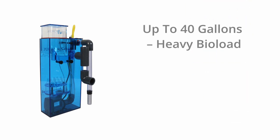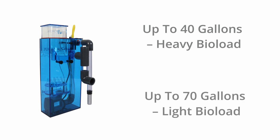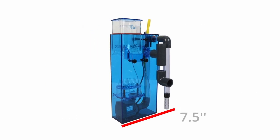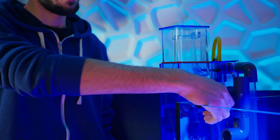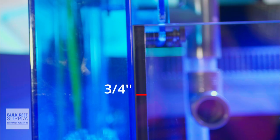These skimmers are rated for up to 40 gallons of heavy bio load and up to 75 gallons of light bio load. The skimmer is quite compact for a hang on model at just seven and a half inches across, three and a half inches thick and 17 inches tall, and it'll fit nicely on panels up to three quarters of an inch thick with the intake and output pipes needing roughly three and a half inches of clearance into the tank.